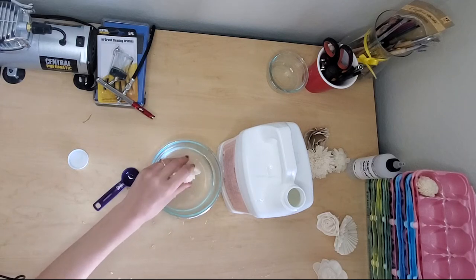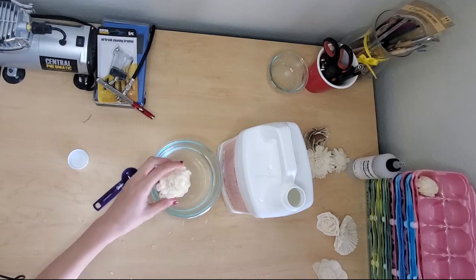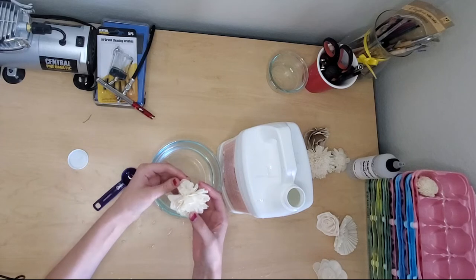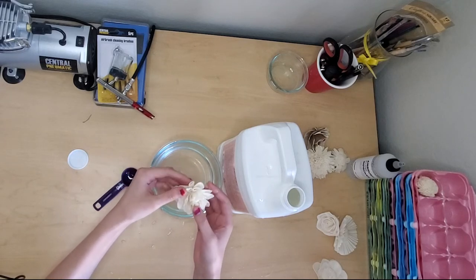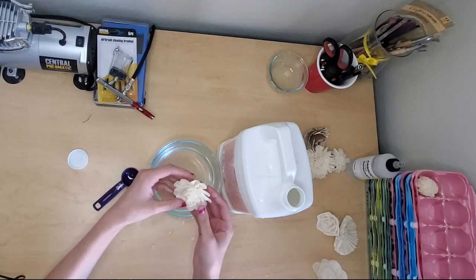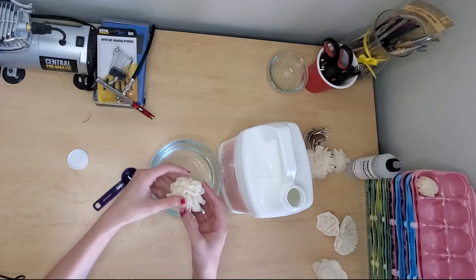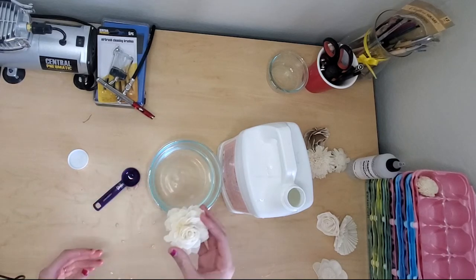And then right now is actually the perfect time to fluff your flower to make sure that it looks the way that you want to. So you can go around and kind of adjust the petals. If there's petals that are coming uncurled, you can curl them back up. Petals that are a little bit squished, kind of shape them and then set it to dry.